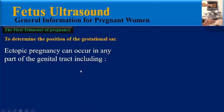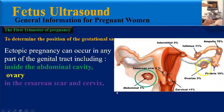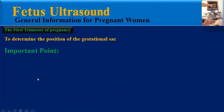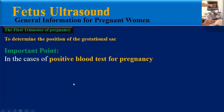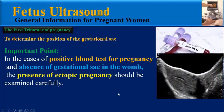Ectopic pregnancy can occur in any part of the genital tract, including inside the abdominal cavity, in the ovary, in the caesarean section scar, and in the cervix, but the most common site is the uterine tube. On both sides of the womb there are two tubes named uterine tubes or fallopian tubes, which is the most common site of ectopic pregnancy. Please pay attention to this important point: in cases of a positive blood test for pregnancy and the absence of a gestational sac in the womb, the presence of ectopic pregnancy should be examined carefully.